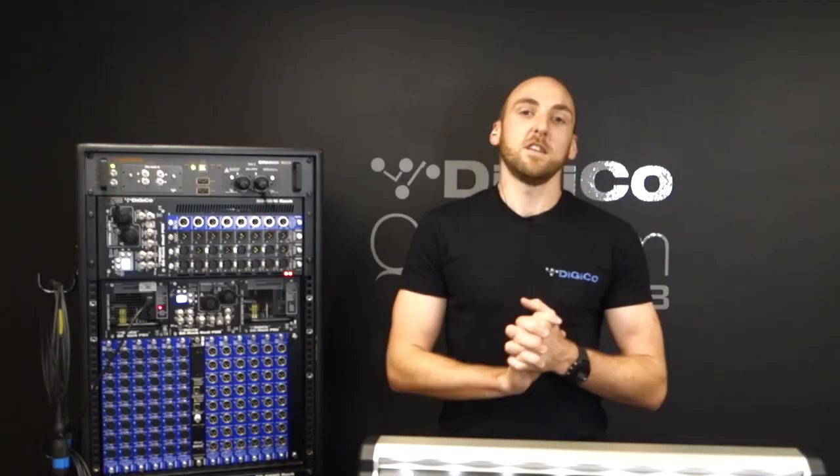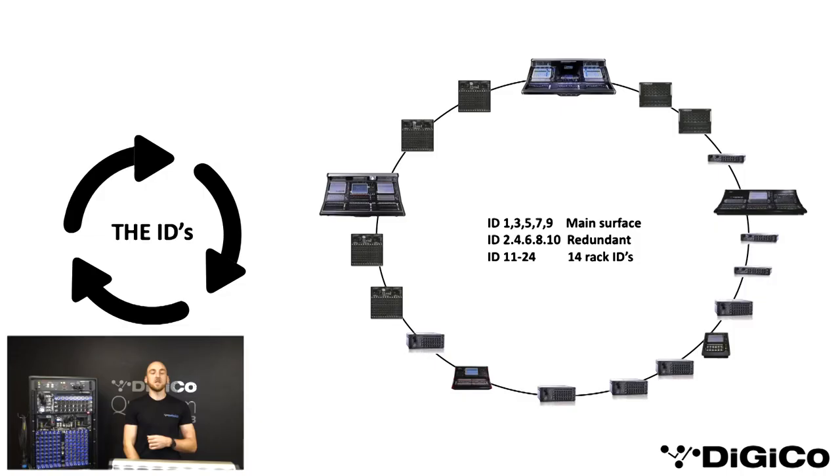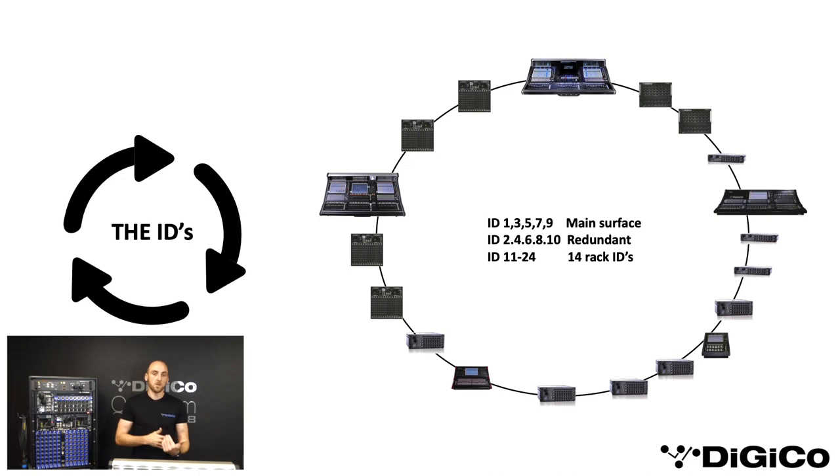But how are we going to identify each device so they are independent? I want you to run through our next topic — the IDs. So for such a large network or such a large setup, each device is going to have to have a unique ID or identifying number, so everything knows where everything else is. The system uses 24 IDs and these are reserved for desks and racks separately. IDs 1 to 10 are exclusively for your consoles. IDs 11 to 24 are exclusively for your stage boxes. As shown on screen, IDs 1, 3, 5, 7 and 9 are used for the main mixing engines. If you have a redundant engine next to your main mixing engine, these are provided with the adjacent even number: 2, 4, 6, 8 and 10.